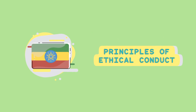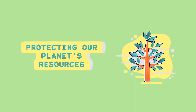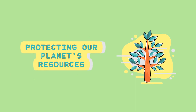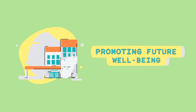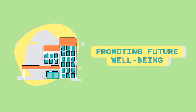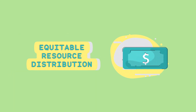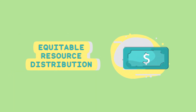Ethics. Care for the Earth: this involves protecting the planet's natural resources and ecosystems. Care for people: ensuring the well-being of all people, both now and in the future. Fair share: distributing resources equitably and ensuring that everyone has what they need.